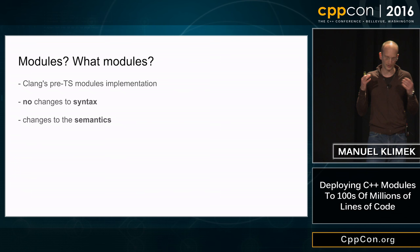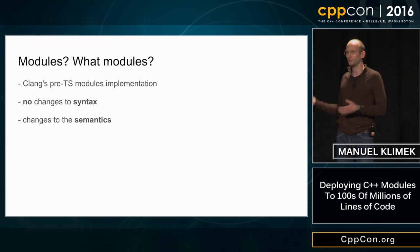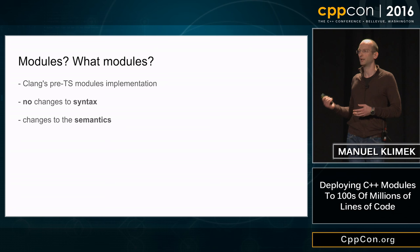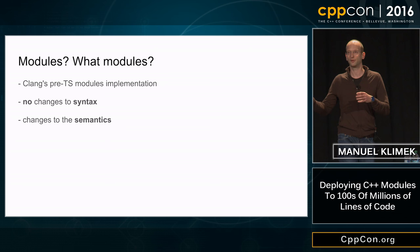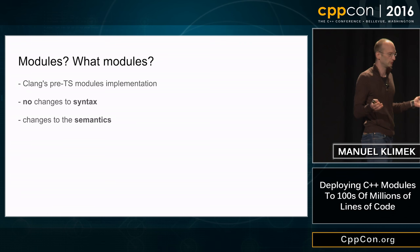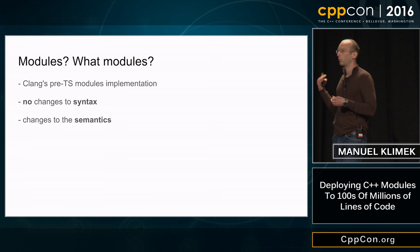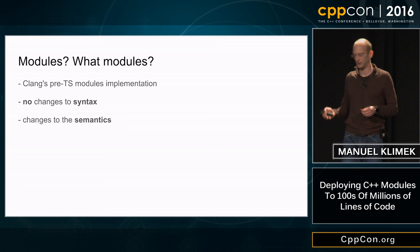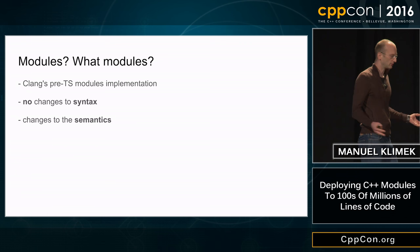Now we want to roll out modules. When we say modules here, this was multiple years ago — we wanted to take Clang's module implementation at the time. We knew modules would eventually be standardized but didn't know what that would look like. So we decided not to make any changes to syntax in our code. That means we still spell out hash includes, but we allow semantic changes. Previously, people trying pre-compiled headers ran into problems keeping C++ semantics correct, which took away all the upsides. So we allowed semantic changes but no syntax changes.